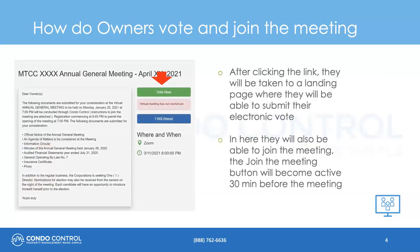Once they click the link, they will be taken to a landing page. The agenda for the AGM will be displayed and owners will be able to cast their electronic vote using the Vote Now button. They will also be able to join the meeting through this link when it becomes active 30 minutes prior to the start of the meeting.